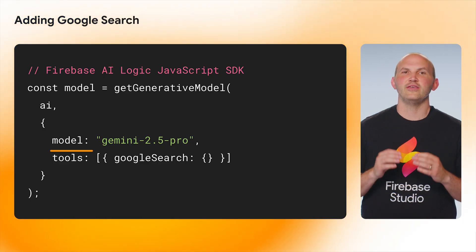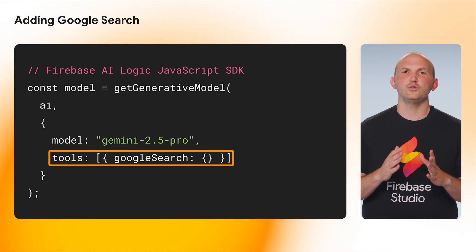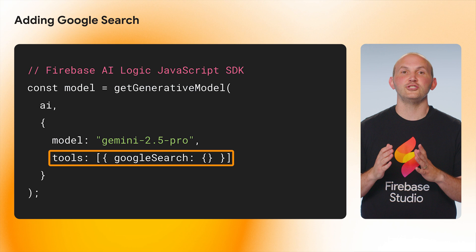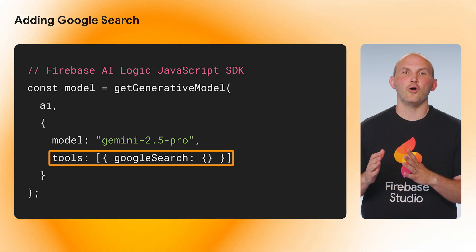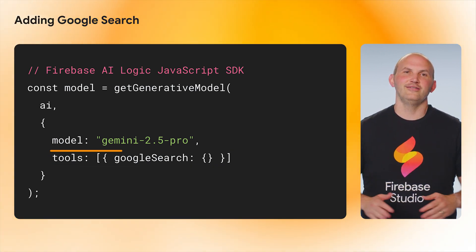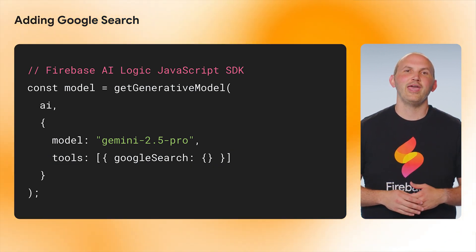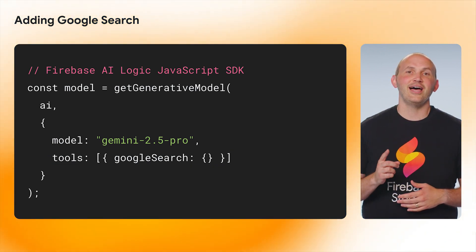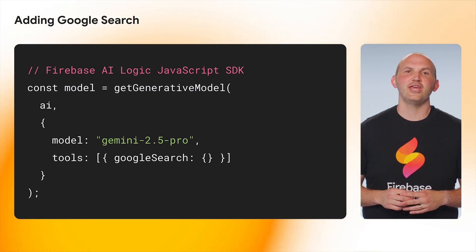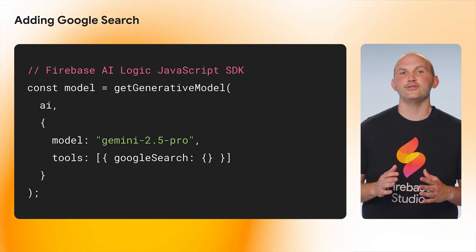Let's power up this app with Google Search. To add Google Search using Firebase AI Logic, it's a one-line change. Here, we add the Google Search tool to our available tools in our generative model call, and we are done. Once we add in this line, let's hop back to our presentation and check out the results.